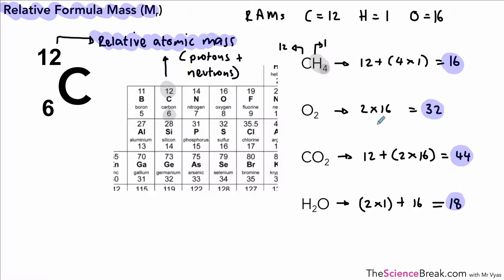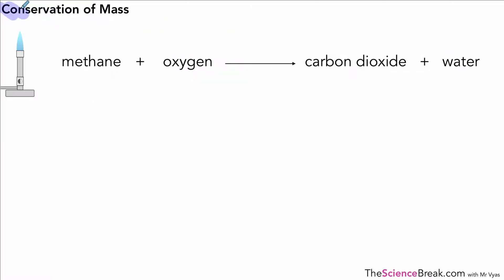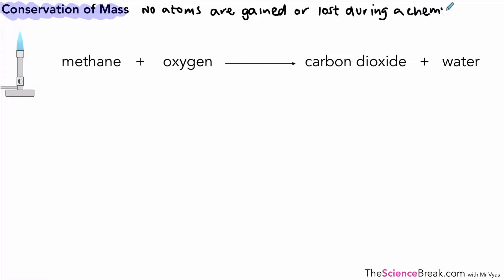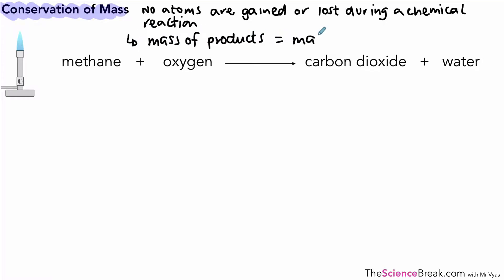Next we look at conservation of mass using a simple equation — methane burning in oxygen. Conservation of mass tells us that the number of atoms is the same before and after a chemical reaction; no atoms are gained or lost. We can also say that the mass of the products equals the mass of the reactants. In this reaction, the reactants are methane and oxygen, and the products are carbon dioxide and water.